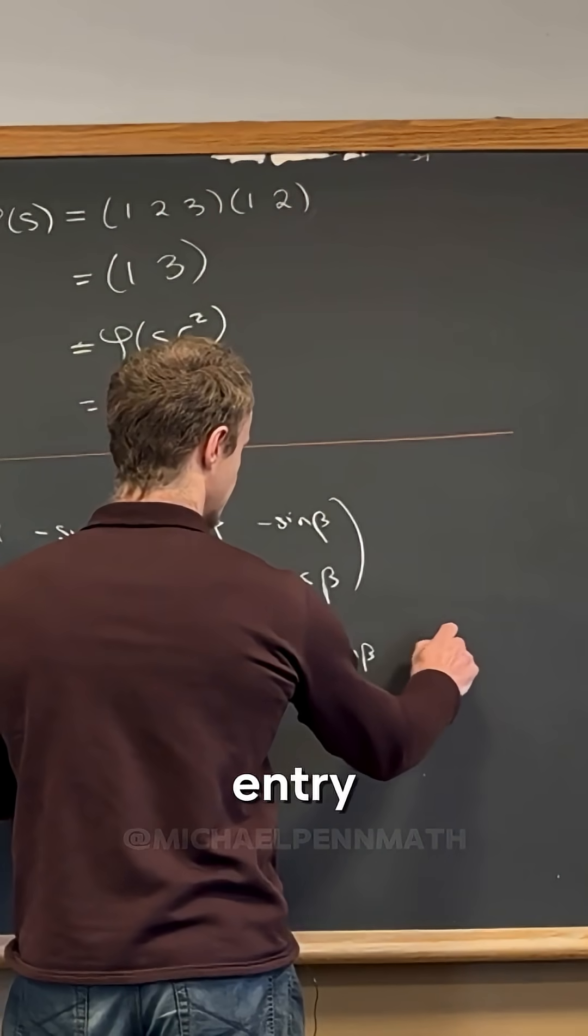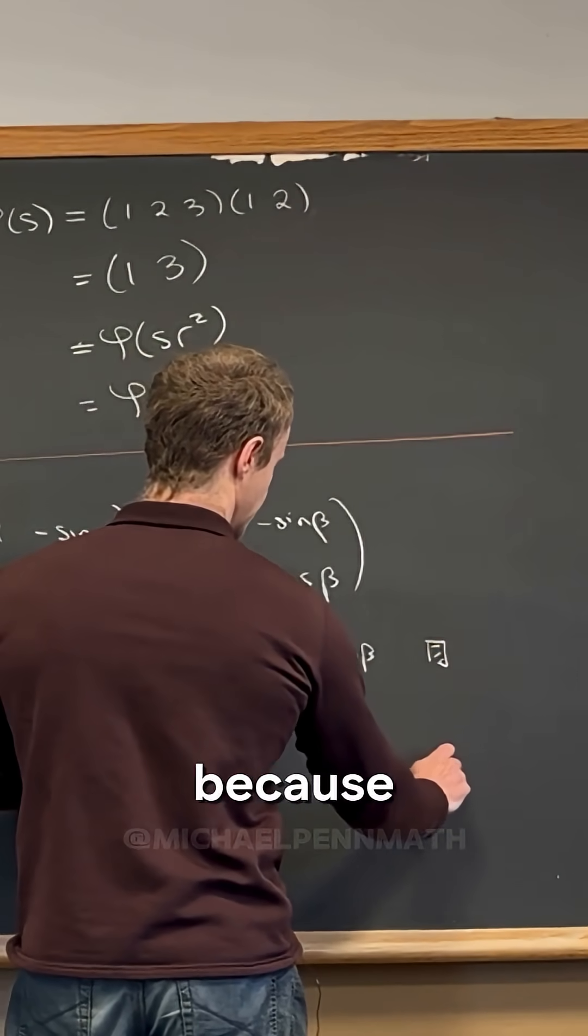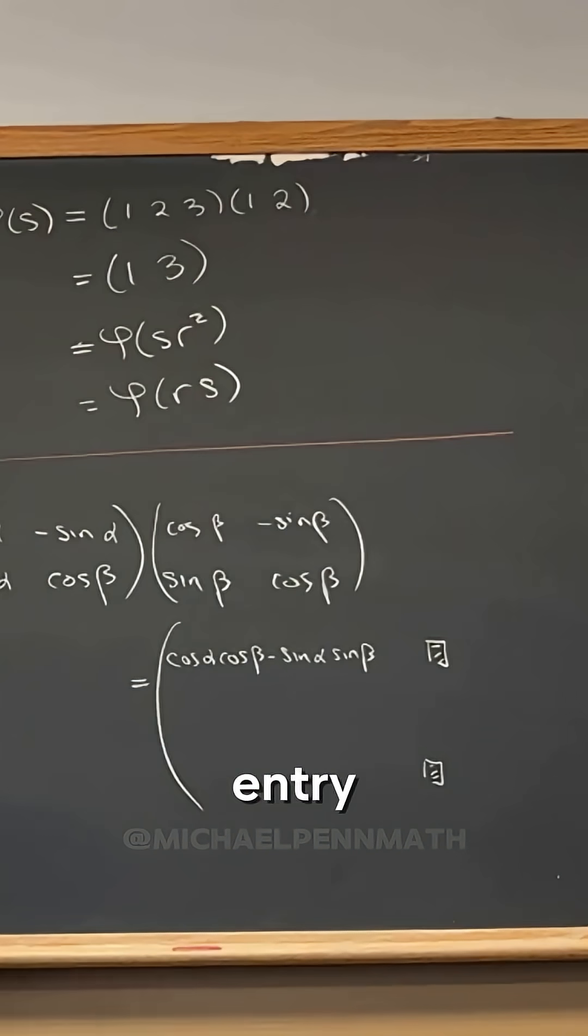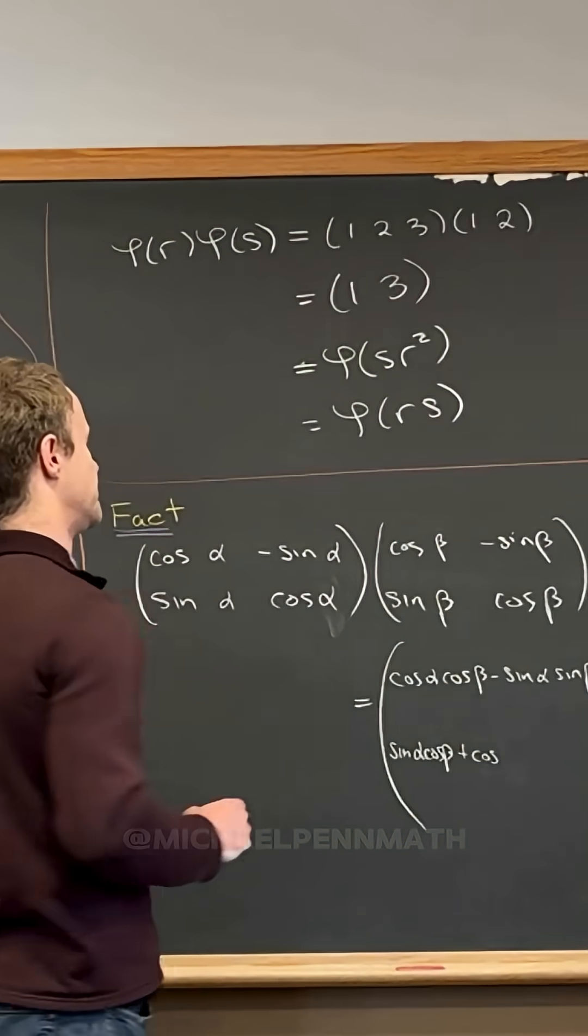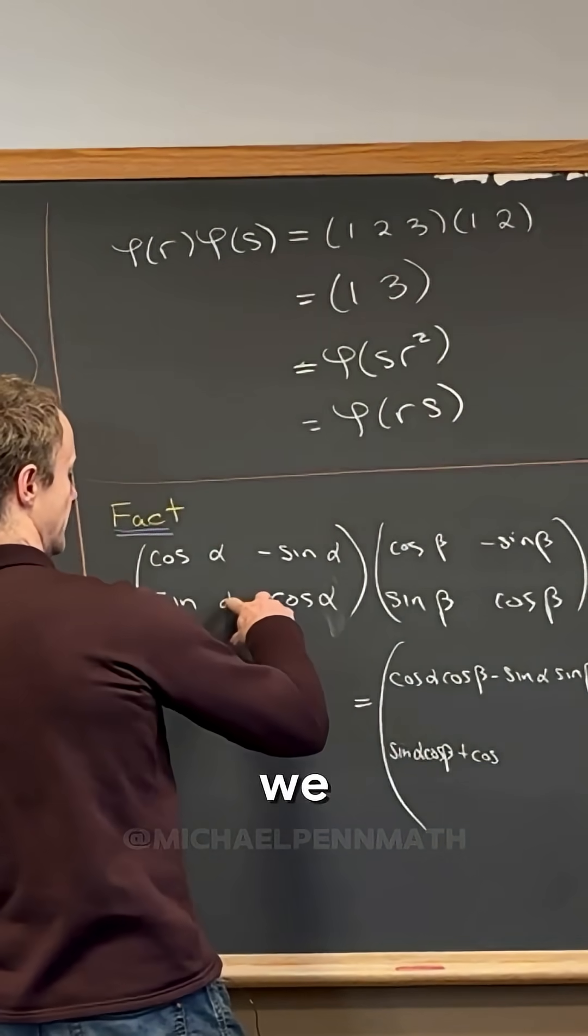Then I won't do this entry or this entry because they're like the same, but what's the bottom left entry by matrix multiplication? Oh sorry, this should be an alpha. So for this entry right here, we take the second row in the first column, so cosine alpha sine beta. So it's that, right?